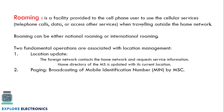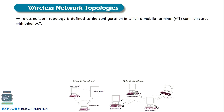What is roaming? Roaming is a facility provided to a cell phone user to use wireless networks while traveling outside the home network. This can be either national roaming or international roaming. Two fundamental operations are associated with roaming, corresponding to location management. First, location update: the foreign network contacts the home network and requests service information, and the home directory of the mobile station is updated with its current location. Second, paging: broadcasting of the mobile identification number corresponding to that particular MSC.